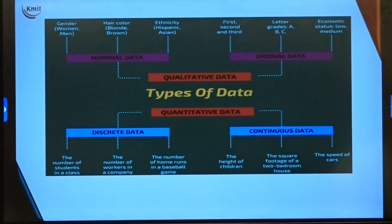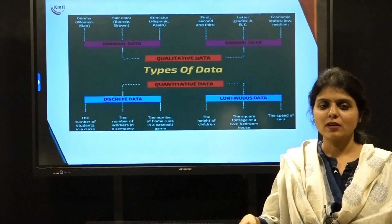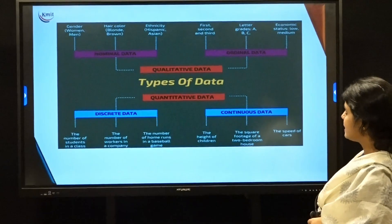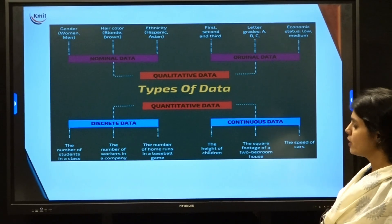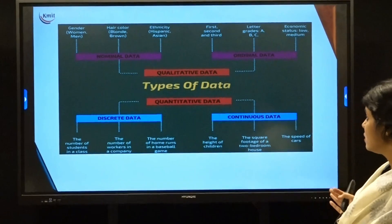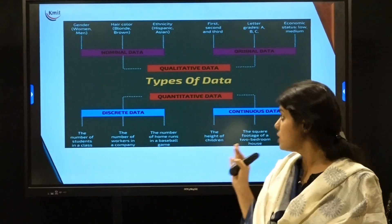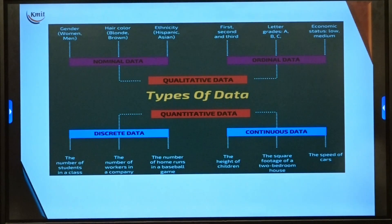Discrete data consists of distinct or countable values — for example, the number of workers in a company or the number of students in a class, which are generally fixed. Ordinal data has categories with a clear ordering or ranking, such as student grades: first class, second class, third class, or ratings like poor, average, good, excellent. Nominal data represents categories with no particular order — for example, gender (male, female) or hair color (gray, black, brown).